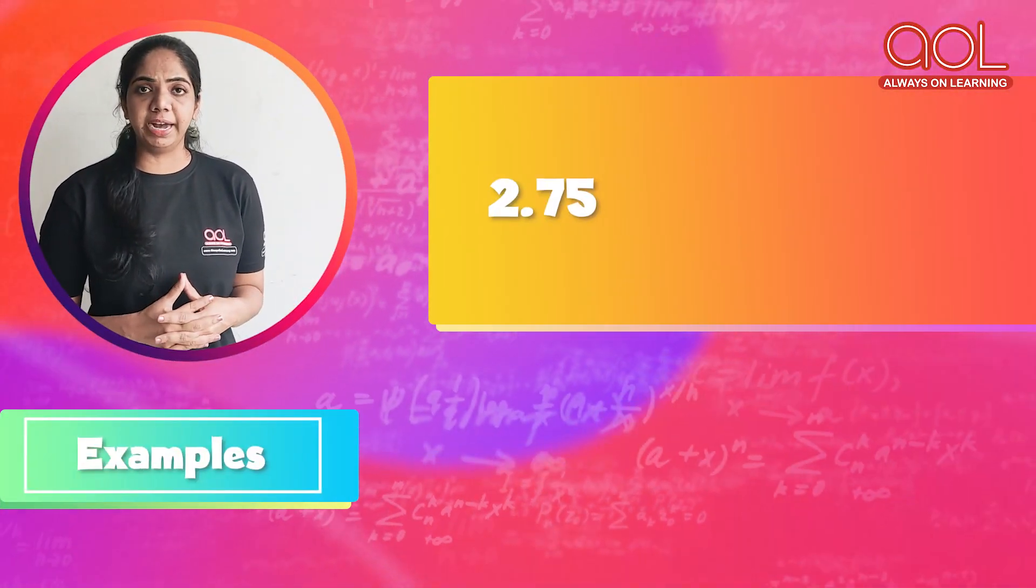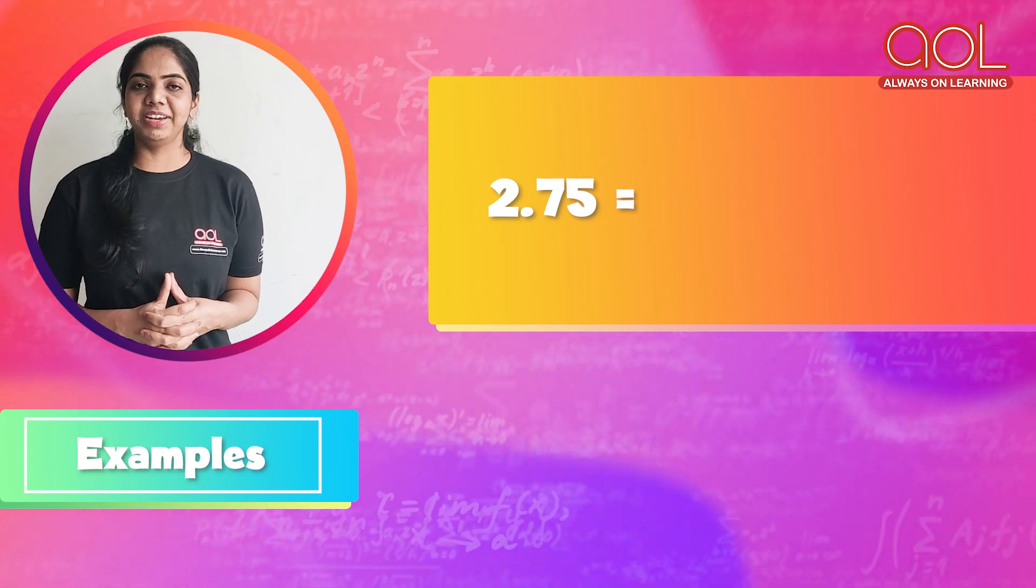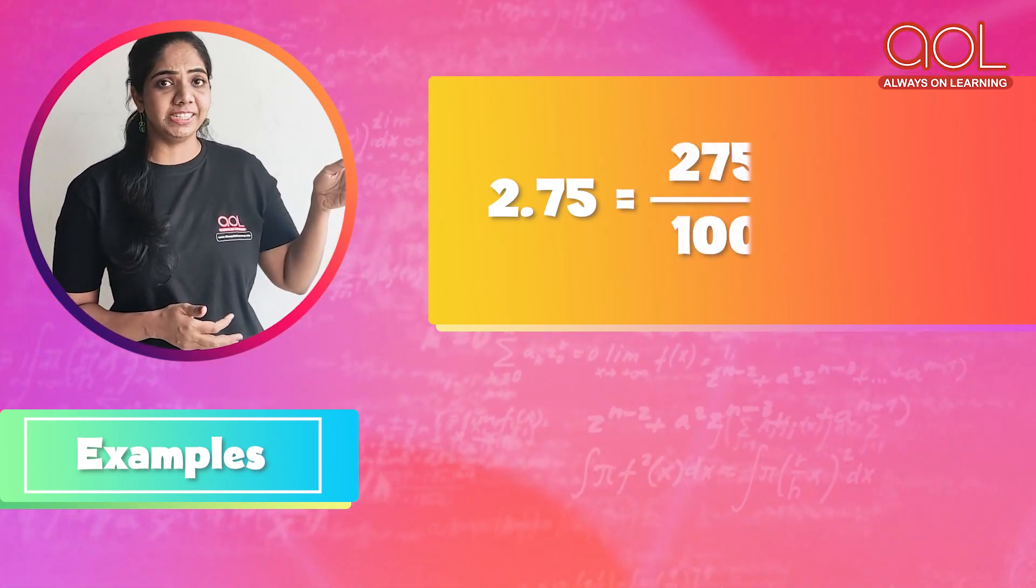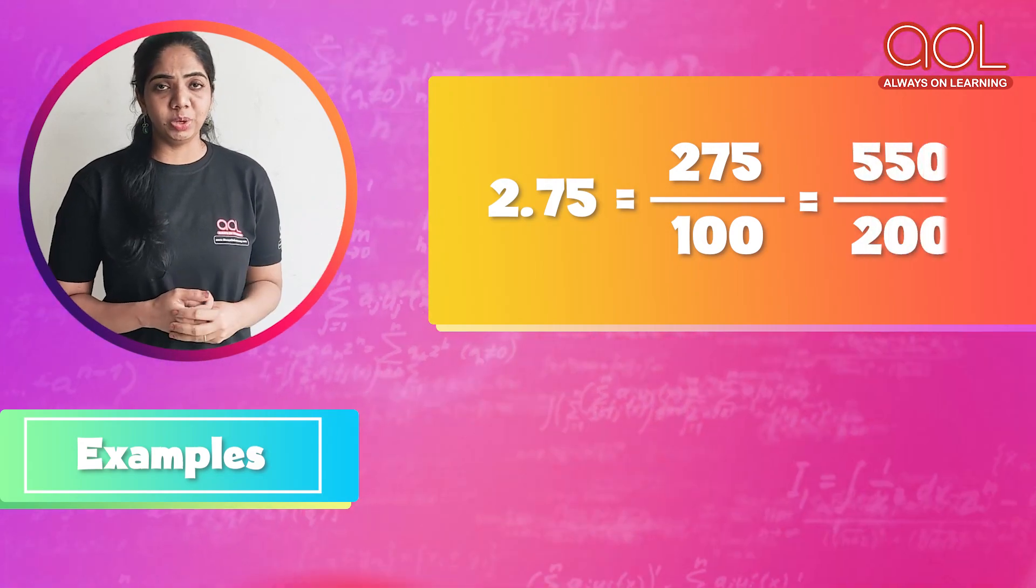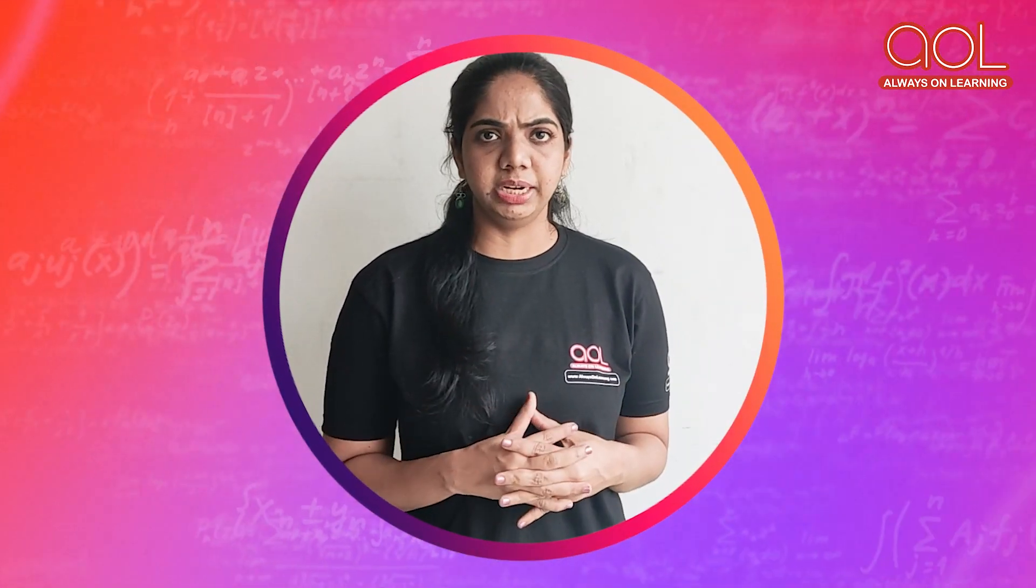What about decimals like 2.75? 2.75 can be expressed as 275 by 100 or 550 by 200. Now we know all these are rational numbers.